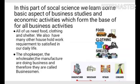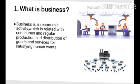You can see in the picture there is a consumer, retailer, wholesaler and manufacturer. Consumer means who are purchasing goods. Retailer means shopkeeper, and the shopkeeper gets things from the wholesaler, and the wholesaler gets things from the manufacturer. So, retailer, wholesaler and manufacturers are doing business. Business is an economic activity which is related with continuous and regular production and distribution of goods and services for satisfying human wants.